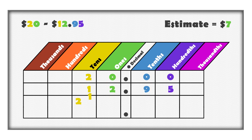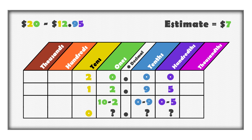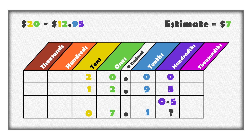Subtracting the tens, we get 1 ten. But how can we subtract the ones, the tenths, or the hundredths? Remember, 10 ones is 1 ten. We can take 1 ten and change it to 10 ones — this is sometimes called borrowing or regrouping. Now we can subtract the ones: 10 ones minus 2 ones is 8 ones. We can borrow again: 10 tenths is 1 one. We can take 1 one and change it to 10 tenths. 10 tenths minus 9 tenths is 1 tenth. To subtract the hundredths, change 1 tenth to 10 hundredths. 10 hundredths minus 5 hundredths is 5 hundredths.